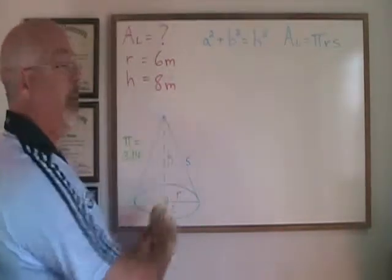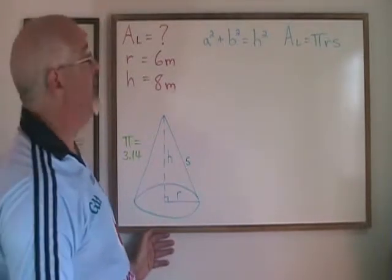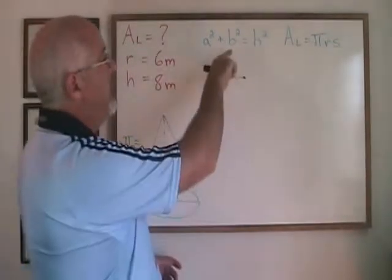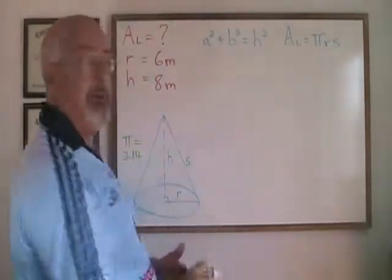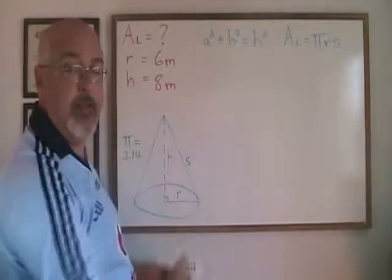R is equal to 6, H is equal to 8. Be careful with this formula because in the usual formula for Pythagoras theorem, H represents the hypotenuse and the hypotenuse of this right triangle is the S, the slant height.